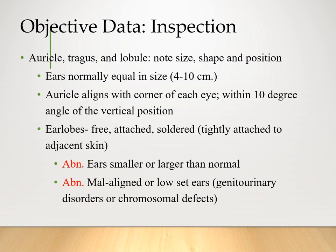We inspect the auricle, tragus, and lobule. When looking at the ears, we check if they are aligned and symmetric, within a 10-degree angle of the vertical position. The auricle is the top of the pinna. Are the earlobes free? Are they larger than normal, malaligned, or low-set? If they are low-set, we might identify this with trisomy 21, which is a chromosomal defect.